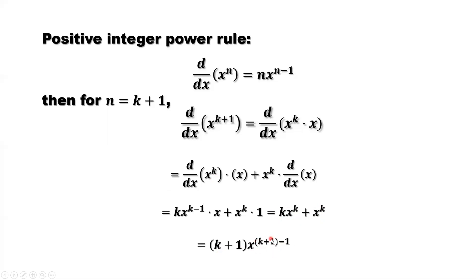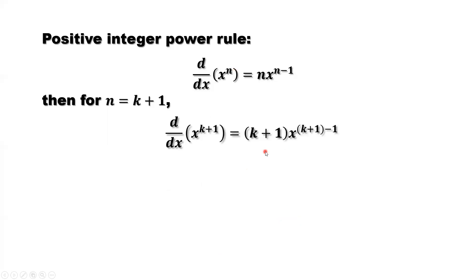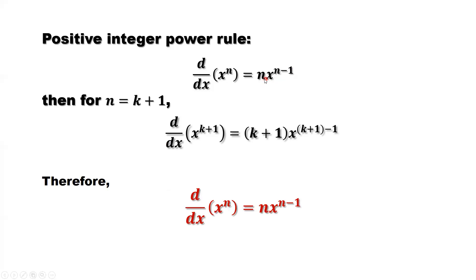We rewrite this to match the format of the original result — the general form is n times x to the power n minus 1. So here, if n is k plus 1, then we have k plus 1 times x to the power k plus 1 minus 1. When n equals k plus 1, this result is also true. Therefore, for any positive integer n, the power rule is always true.